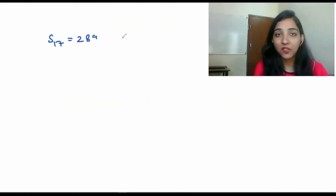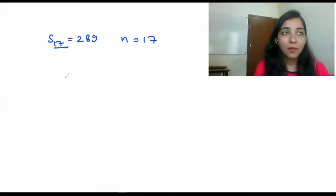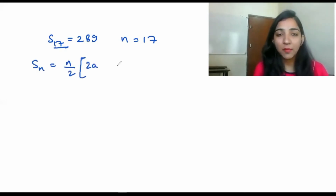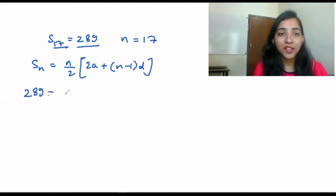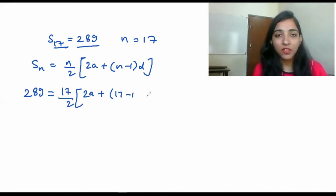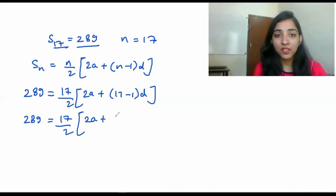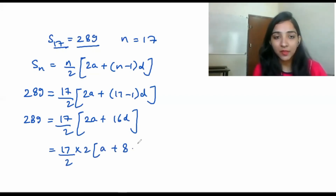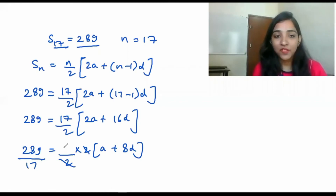For S17 = 289, using the formula: 289 = 17/2 × (2a + 16d). Simplifying — 2 cancels and since 289 is the square of 17, we get: a + 8d = 17. This is our second equation.